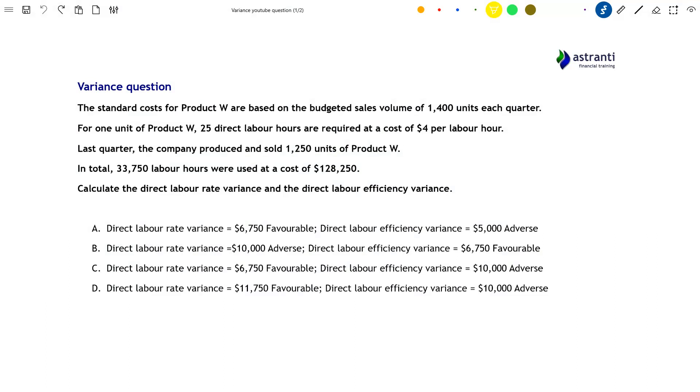Hello and welcome to this Astranti YouTube video. In this video, we're going to look at a typical question that you might face in your BA2 exam. This will focus on labour variances, a topic that students often struggle with. Learning about variances is really important for your certificate level exams and as you progress through your CIMA studies.